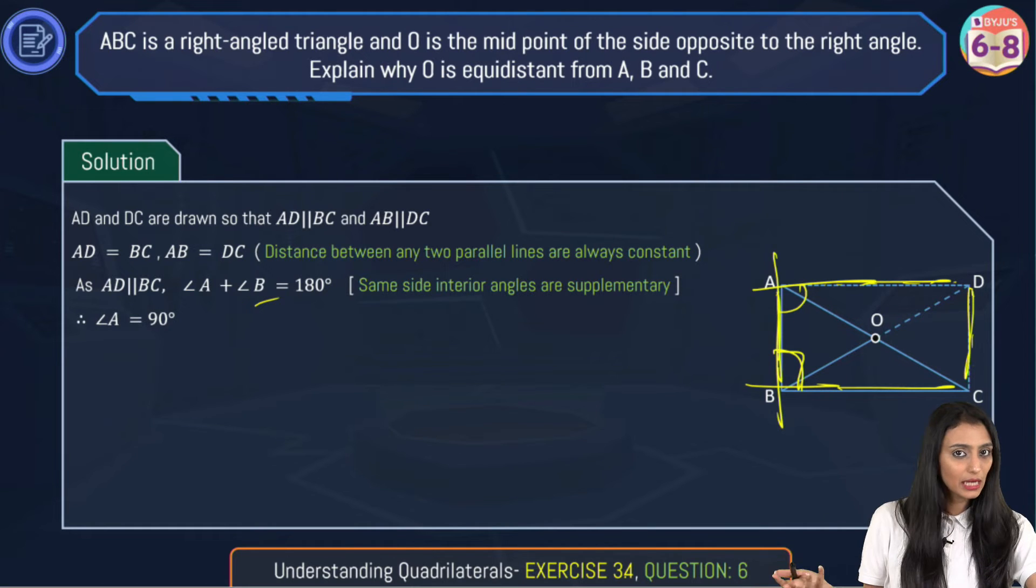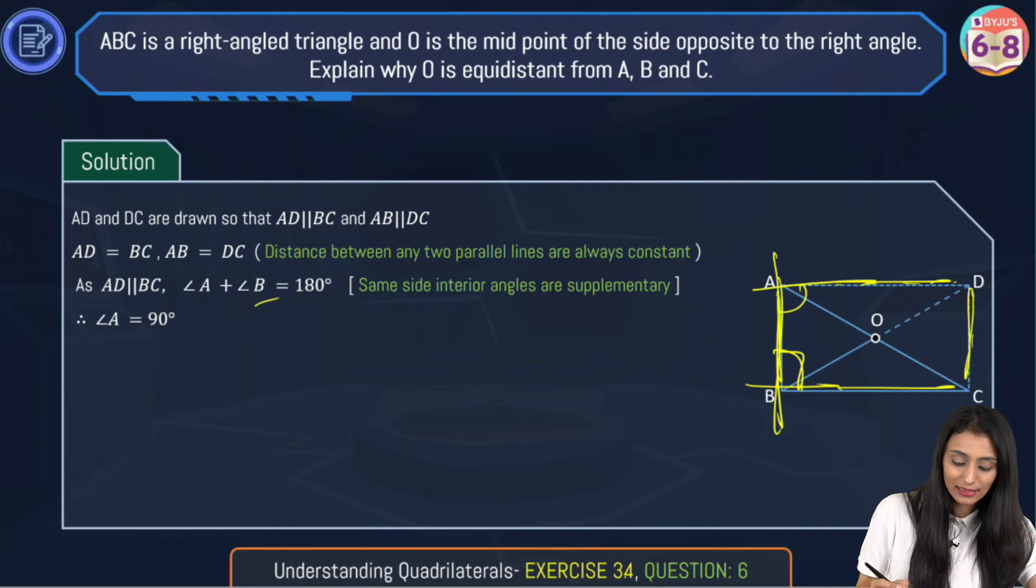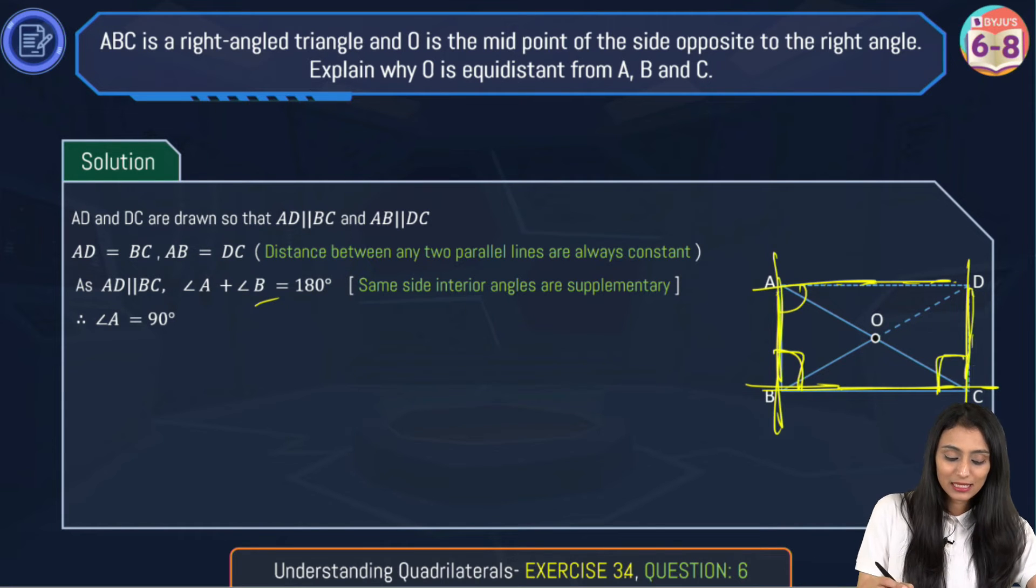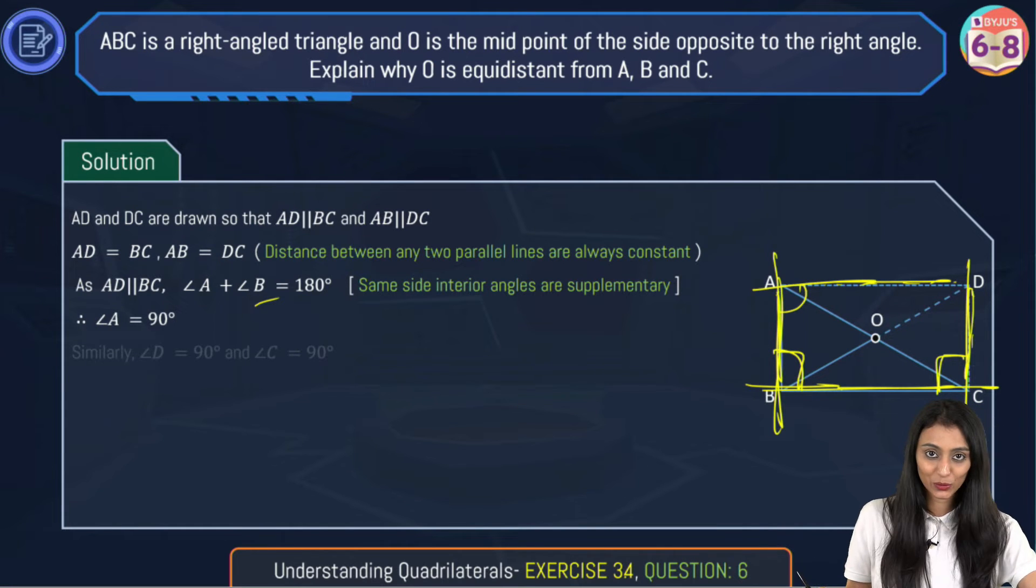Similarly, we can use this for the other angles as well. If I use these parallel lines AB and DC, I can say this is the transversal. So angle B plus angle C will also equal 180 degrees. So angle C would be 90 degrees. Similarly, angle C and D both would be equal to 90 degrees.